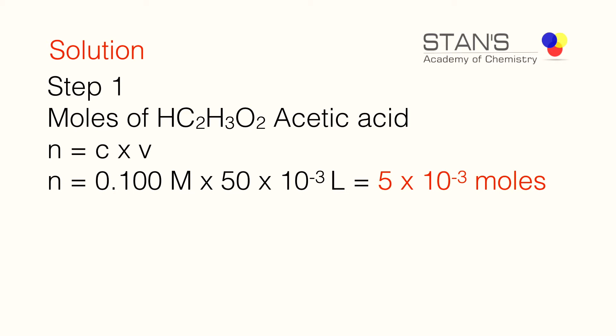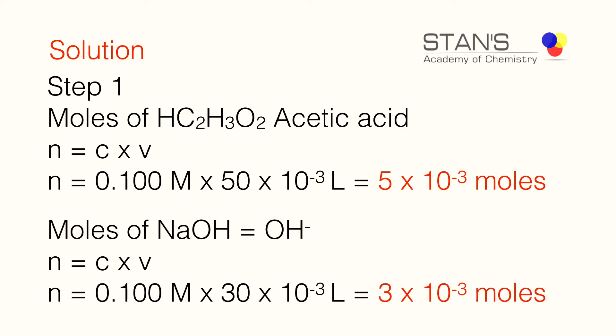The first step is calculating the number of moles of acetic acid present in 50 milliliters: n = c × v = 0.100 mol/L × 50 × 10⁻³ L = 5 × 10⁻³ moles of acetic acid. Next, for sodium hydroxide — a strong base that is completely dissociated — the number of moles is 0.100 mol/L × 30 × 10⁻³ L = 3 × 10⁻³ moles.